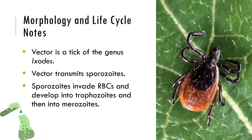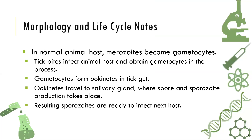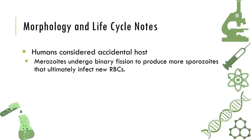Once the sporozoites are injected by this tick, they are capable of invading RBCs. In animal hosts, merozoites become gametocytes. The tick bites infected animal hosts and obtains gametocytes in the process. This is almost similar to the life cycle of Plasmodium. The only difference is the vector. A human is considered an accidental host because Babesia is really an infection of cattle.